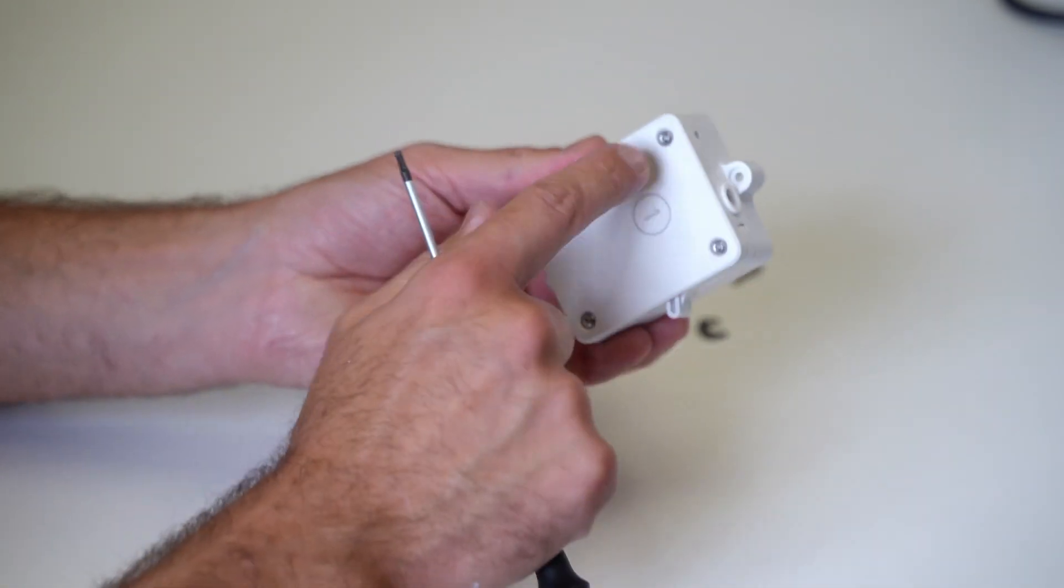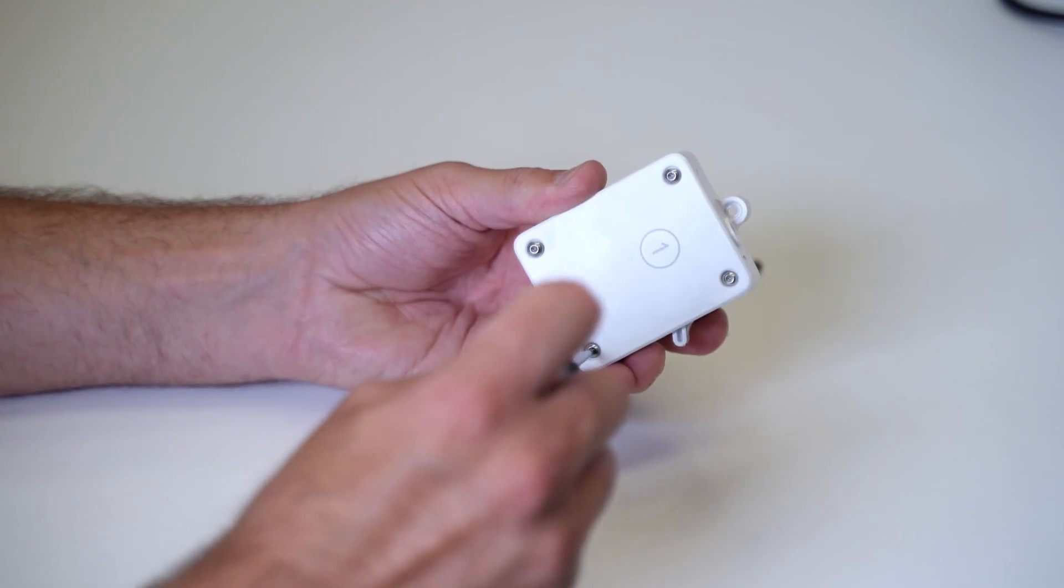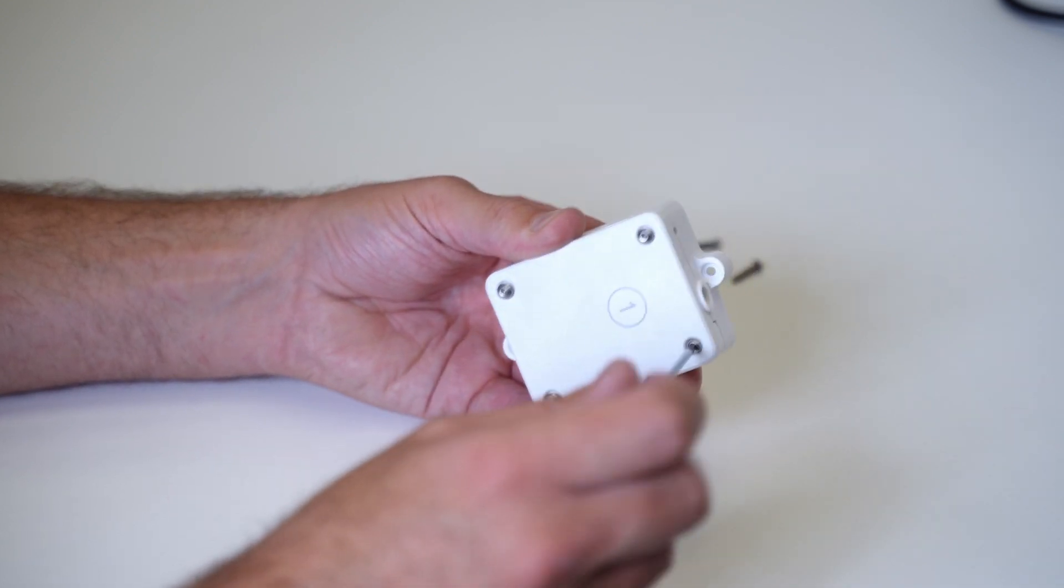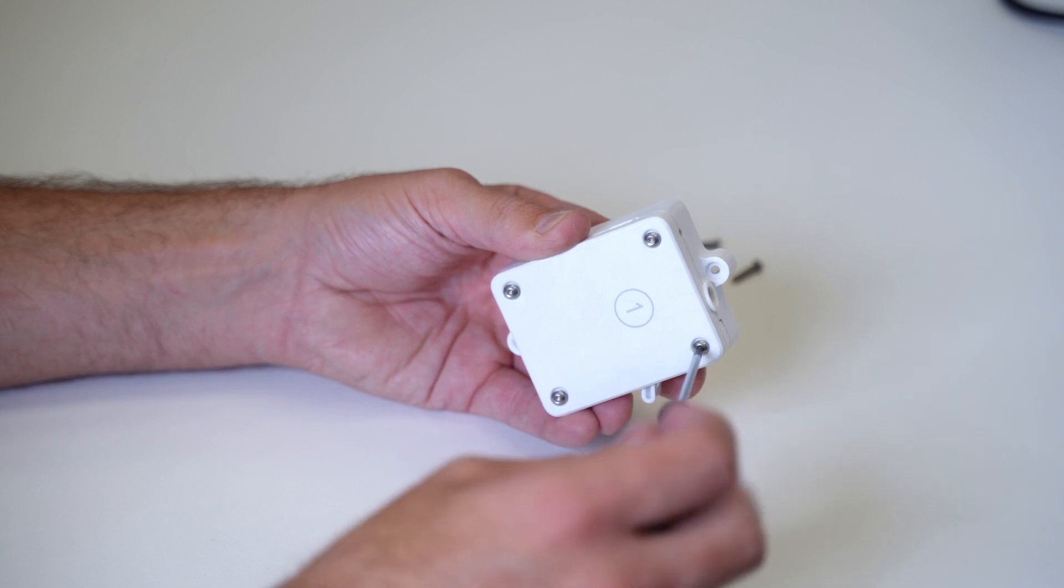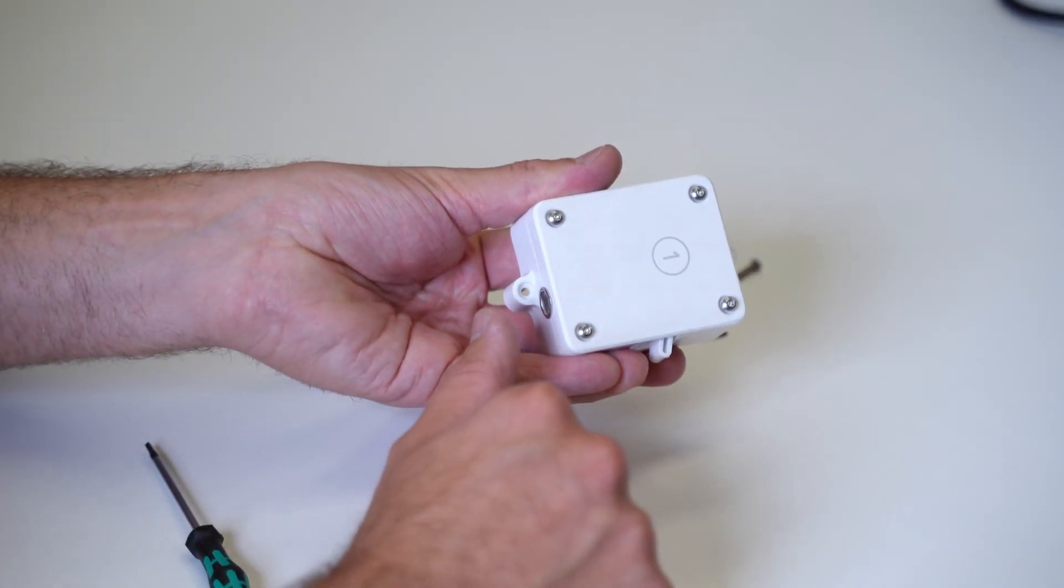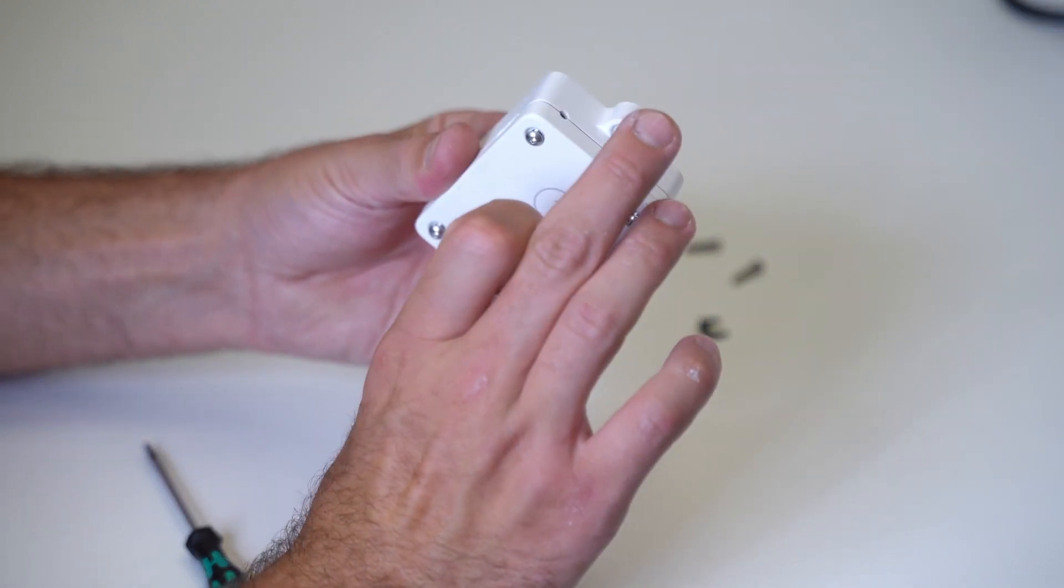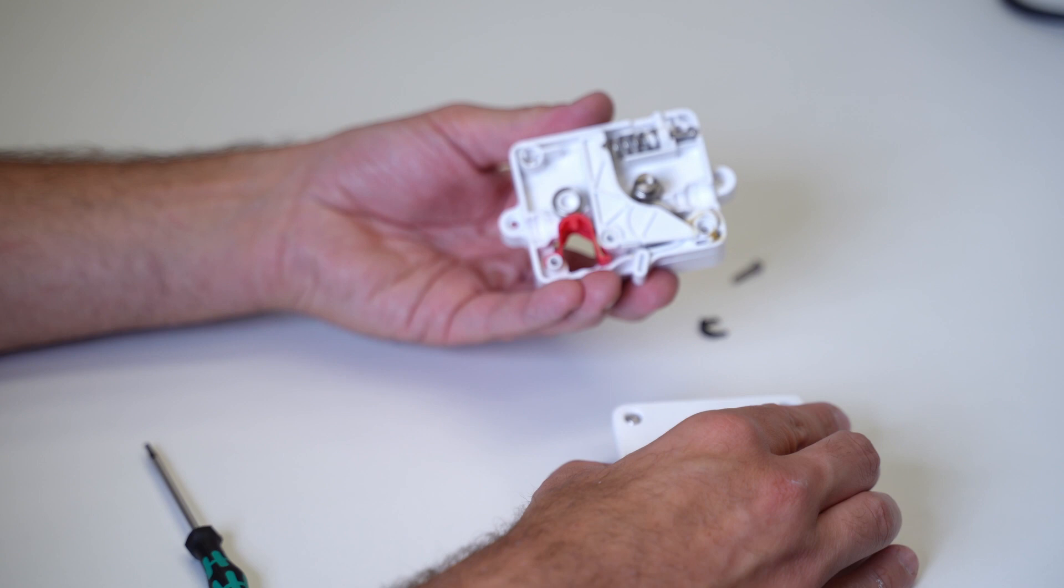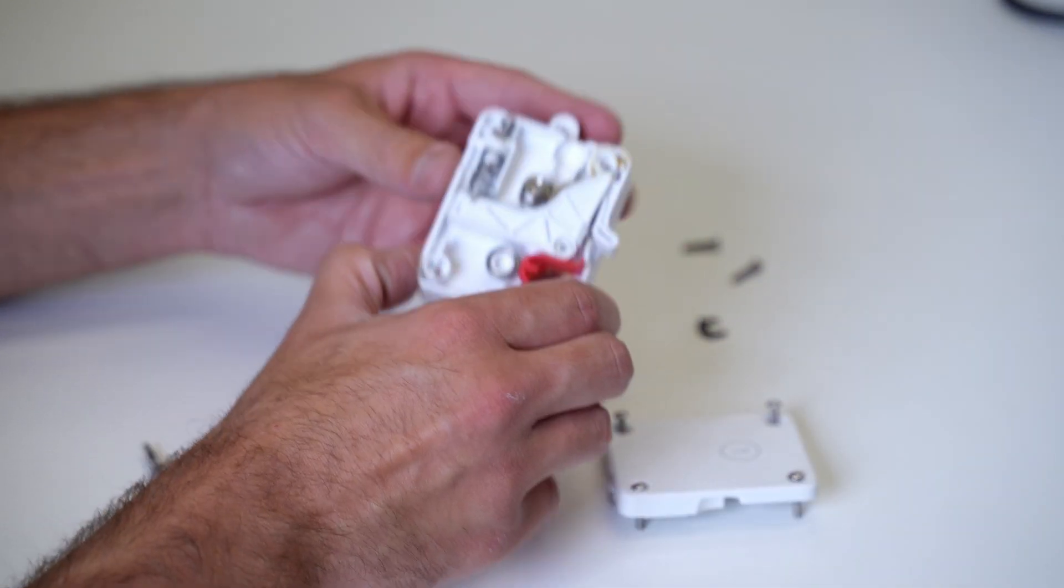Once we're here, we can then start to undo all four of these bolts. Once all those are loose, we're going to put a thumb on the silver ring there and our finger on the white at the top and just pull those apart. That will give us one half and two halves of the feeder.